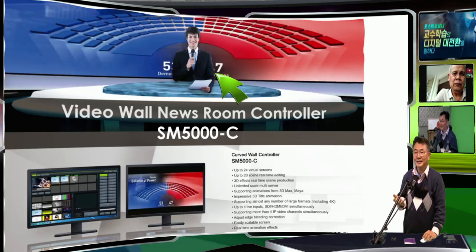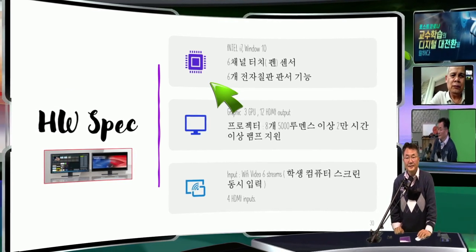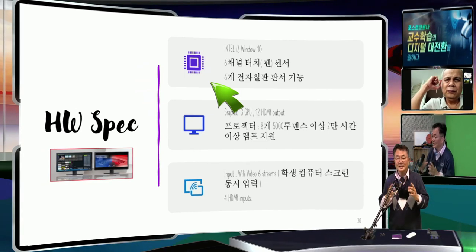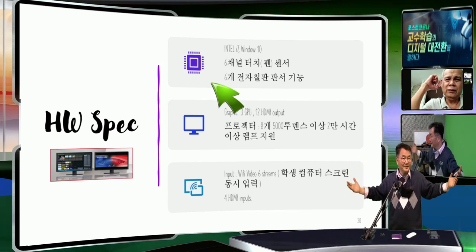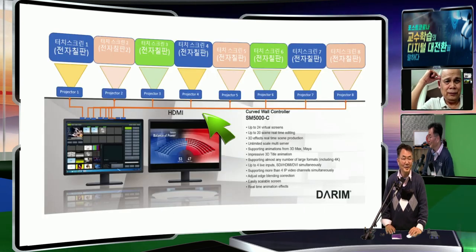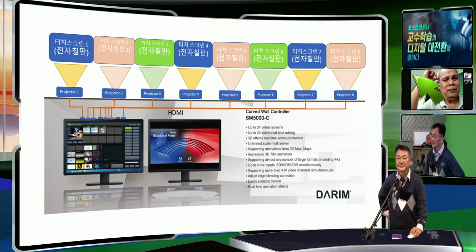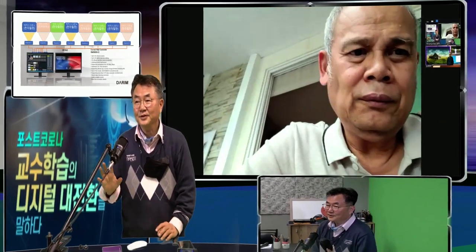We're providing this wall controller to make a very advanced classroom. If students study at home watching their smartphone, when they come to the classroom it becomes like a beautiful theater. This is the idea — how we make a classroom like a theater, and smartphone like IPTV.